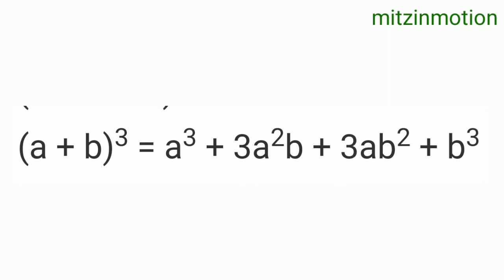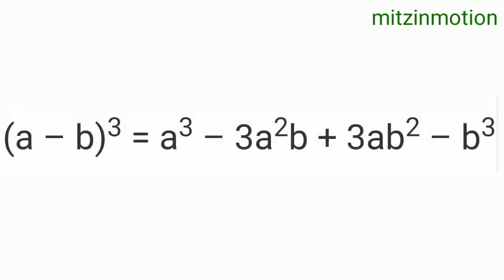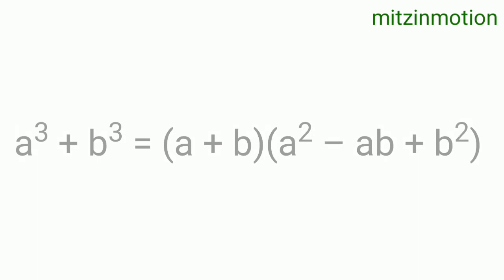(a + b)³ = a³ + 3a²b + 3ab² + b³. Note down where we are writing squares and cubes. The next formula: (a - b)³ = a³ - 3a²b + 3ab² - b³. See where we have used plus and minus — this is very important.